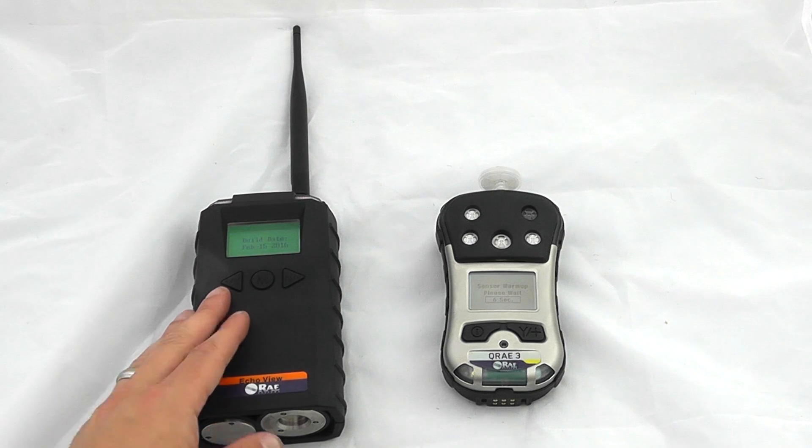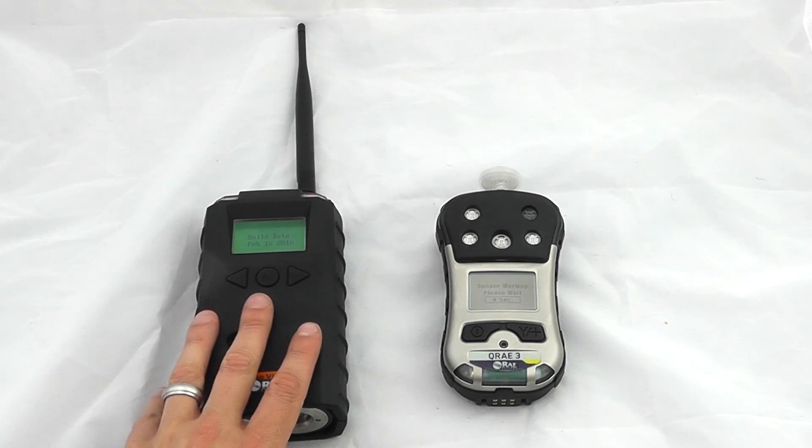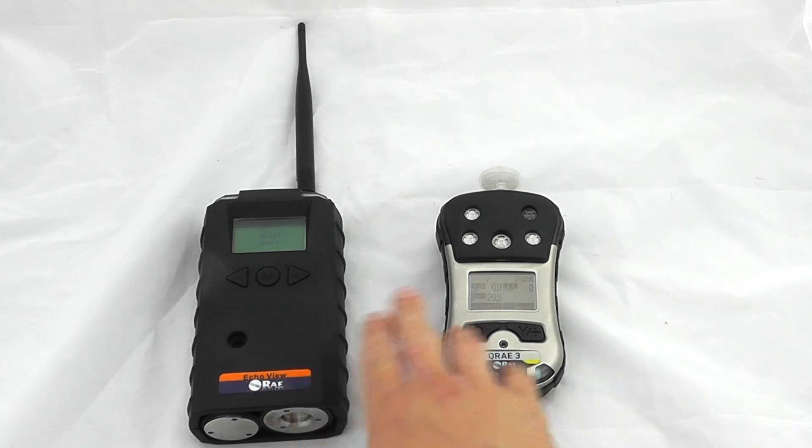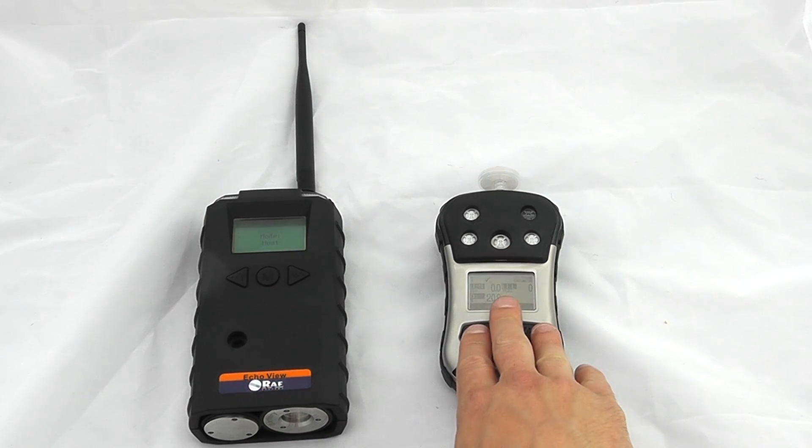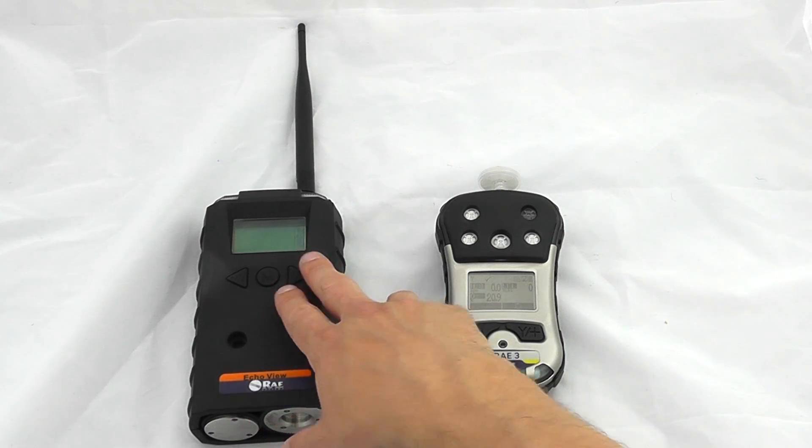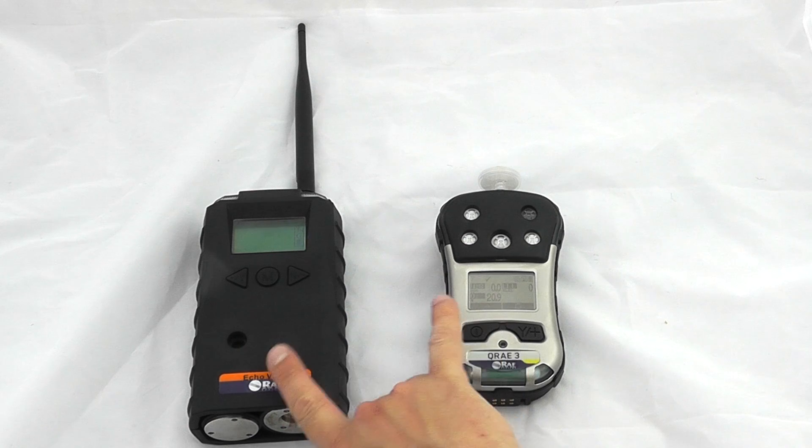When the Echo View starts up, it follows a standard startup procedure and then searches for instruments. Make sure your instruments are warmed up first. This device is in host mode and shows the modem type. It will now search for instruments set up on the same network.